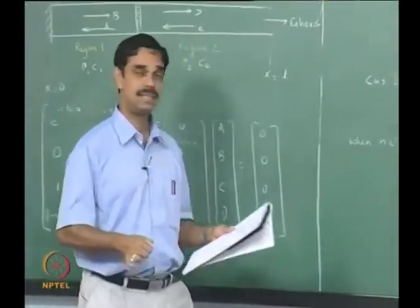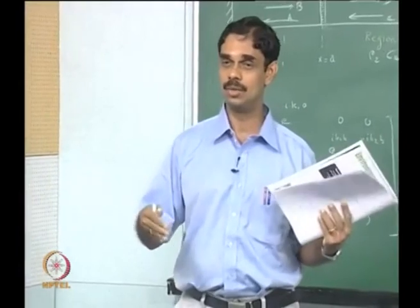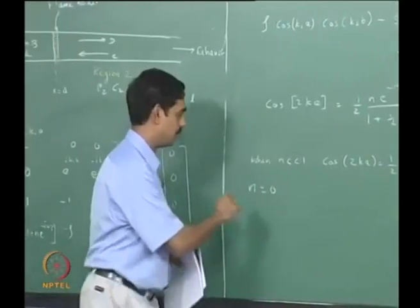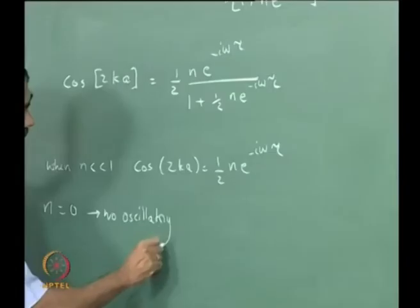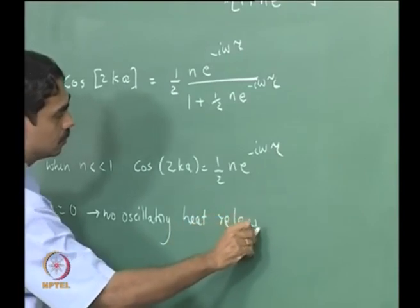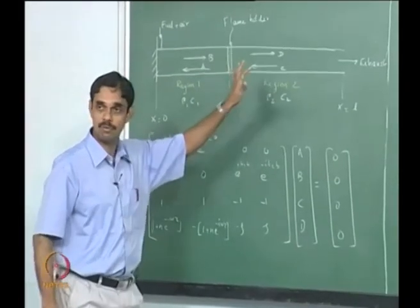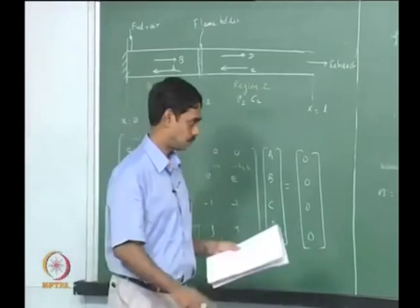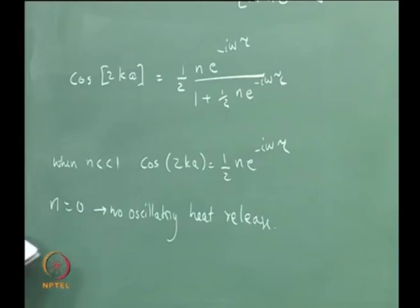We can do this in two steps, similar to a problem we did earlier. First let us study the case without combustion — if we have a general result, we should be able to derive our earlier known results from it. So let us set n equal to 0, which would mean no oscillatory heat release.